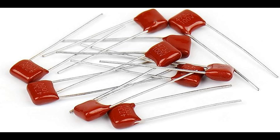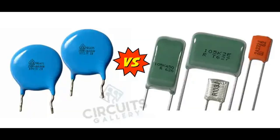Capacitors with the self-healing property are designed with a dielectric material that can repair itself when a breakdown occurs. When a breakdown happens, the localized area forms a conductive path, and the high electric field causes the dielectric material to vaporize, creating a small gap or void. The self-healing mechanism then involves the dielectric material near the breakdown point being vaporized and redeposited as an insulating layer across the gap, restoring the dielectric strength and isolating the affected area from the electrodes.